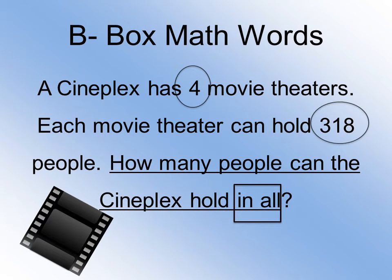Next step — B — box math words. The math action word in here is "in all," so we put a box around it. Because that's telling us we need to find a total.